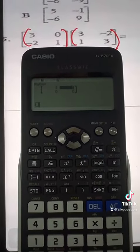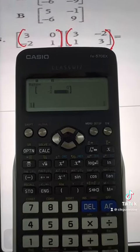Now insert all the numbers in the matrix bracket: 3, 0, -2, and 1.